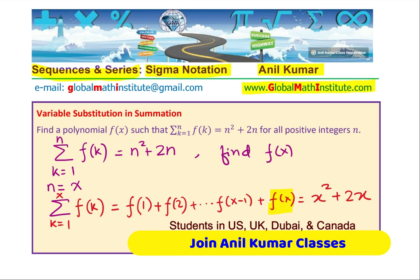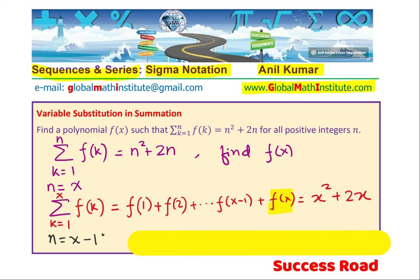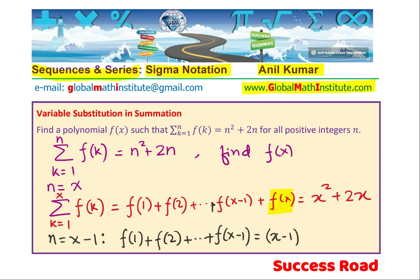So we can find the sum of x-1 terms. If I put n equals to x-1, in that case we have f(1) + f(2) and so on till f(x-1), and this is equal to what? Replacing x with x-1. You get the idea. So then we are in a position to find what f(x) is by taking the difference of these two. Sounds good? So I hope you understand this strategy.